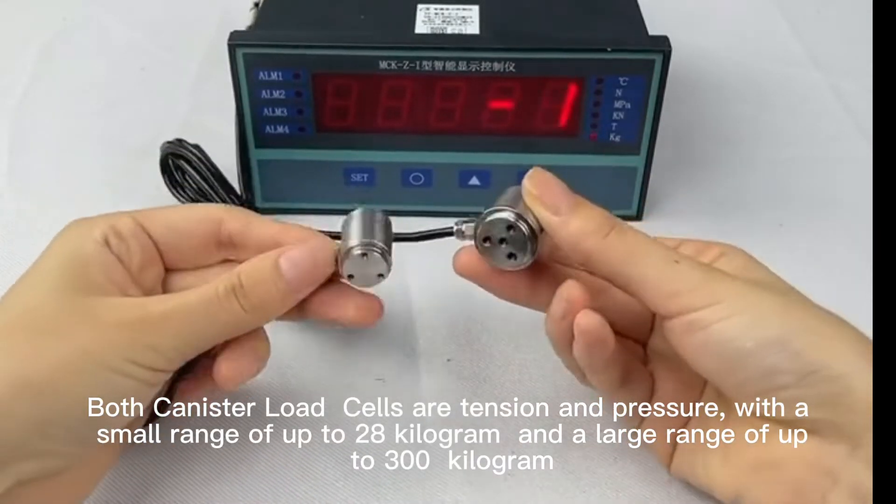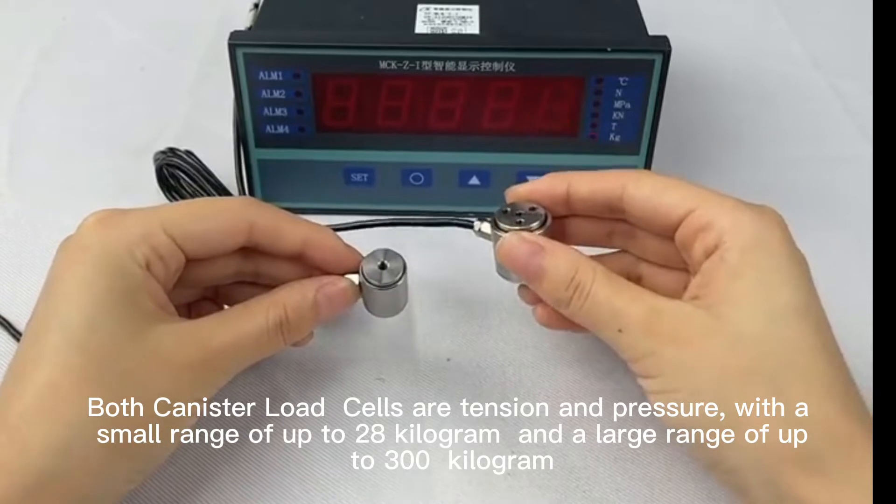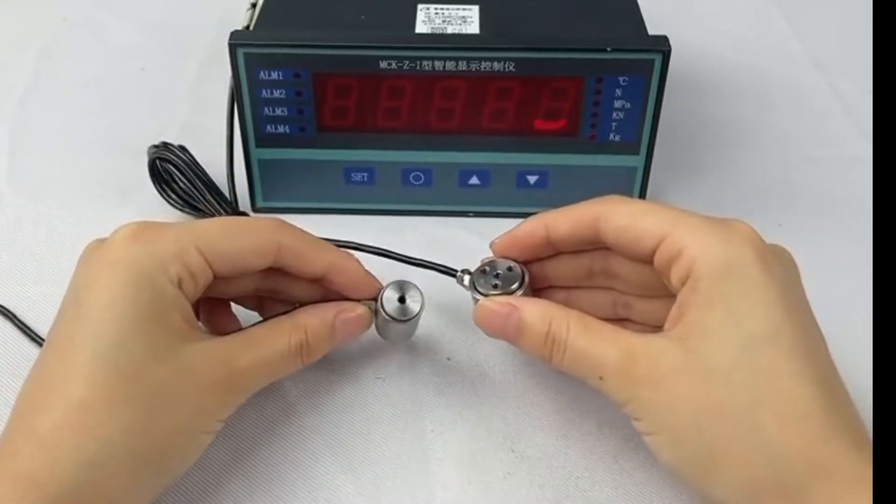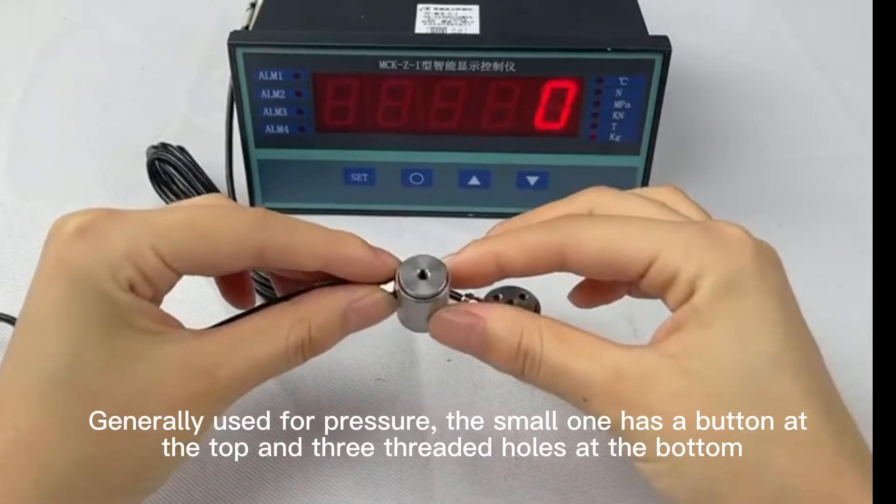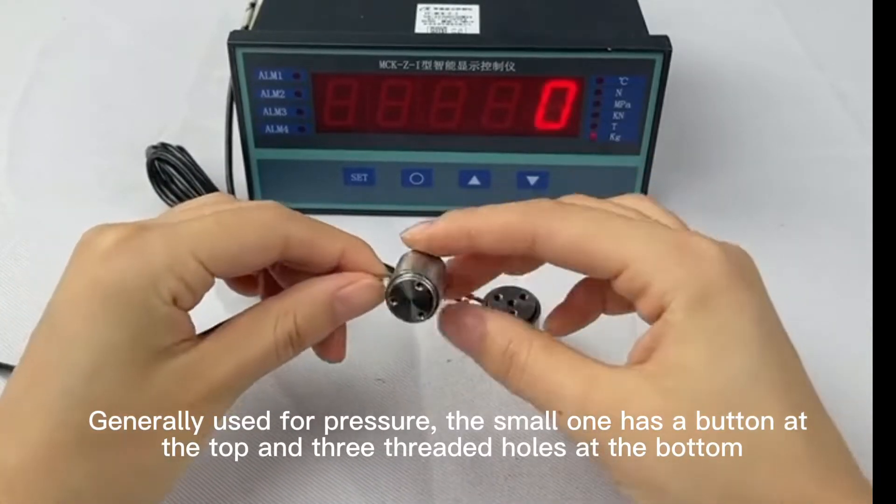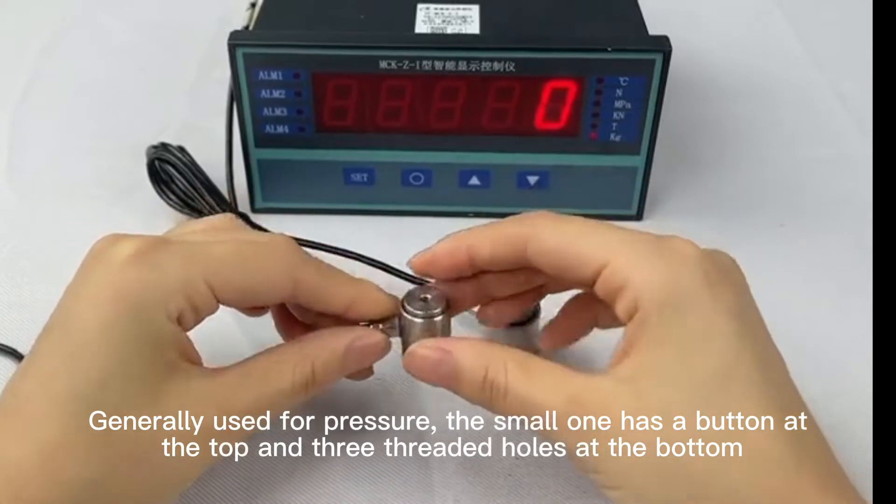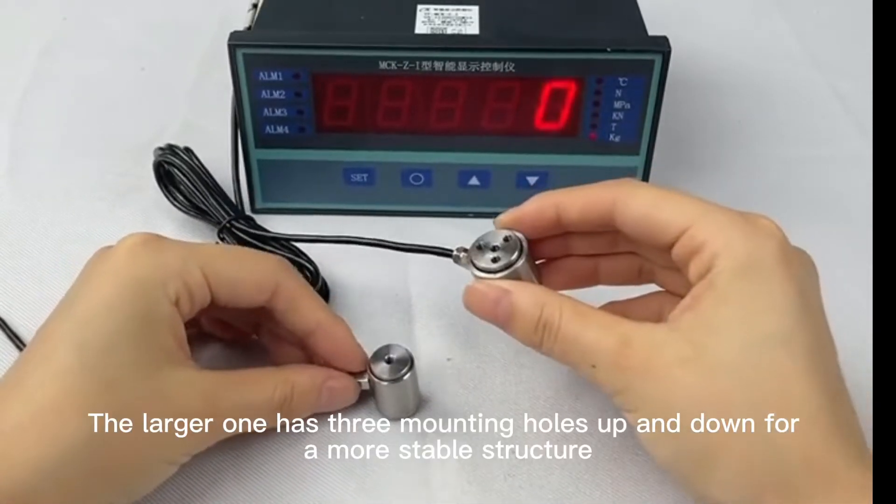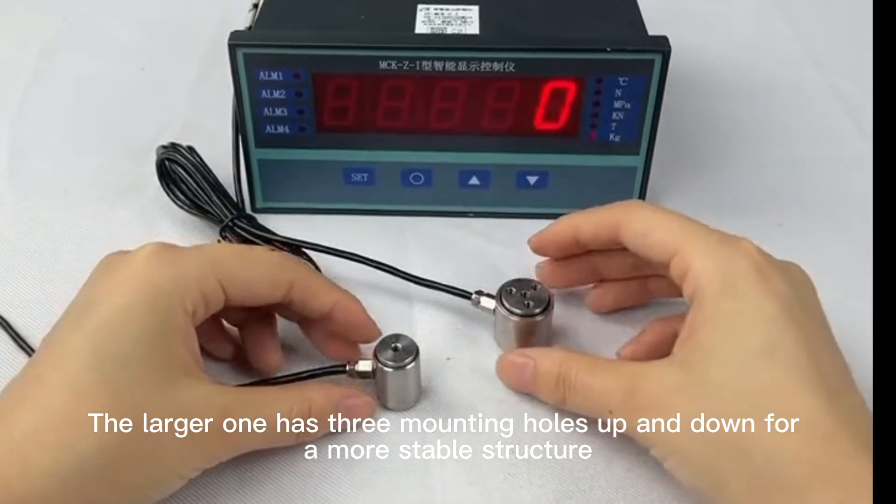Both canister load cells are tension and pressure, with a small range of up to 20 kg and a large range of up to 300 kg. Generally used for pressure, the small one has a button at the top and three threaded holes at the bottom. The larger one has three mounting holes up and down for a more stable structure.